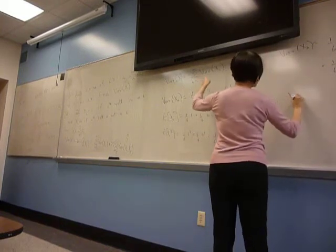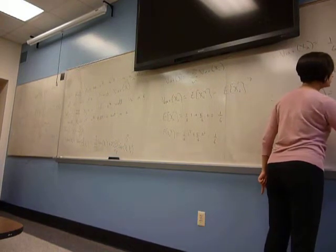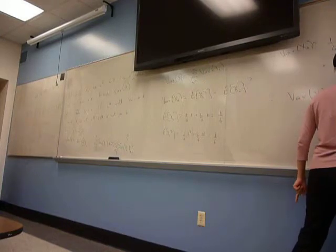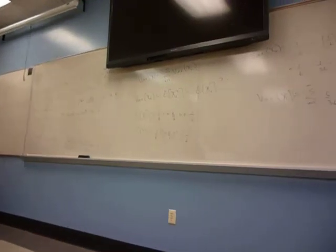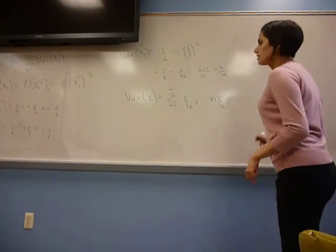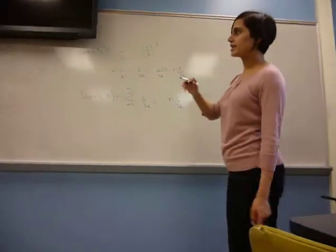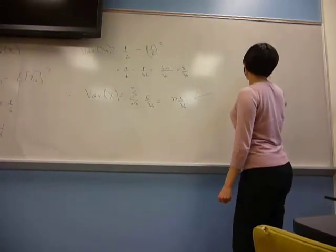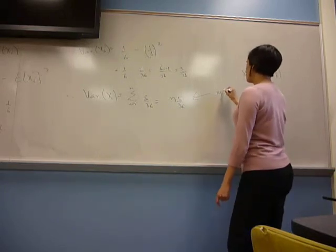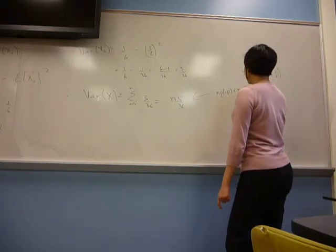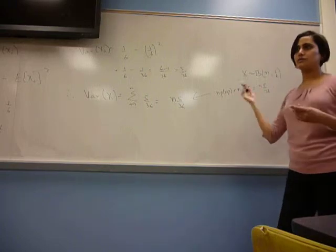So variance of X_i is 1/6 minus (1/6)², which equals 5/36. Therefore, variance of X is the summation from i equals 1 to n of 5/36, which is 5n/36. To check: X is binomial with n and p = 1/6, so variance should be np(1−p) = n × (1/6) × (5/6) = 5n/36. We get the right answer.